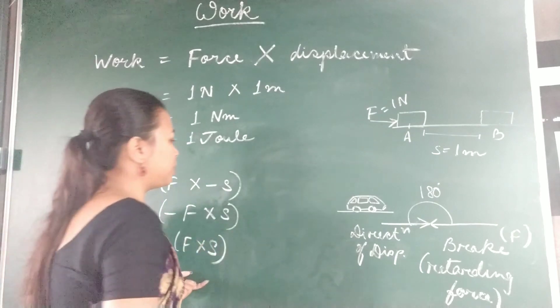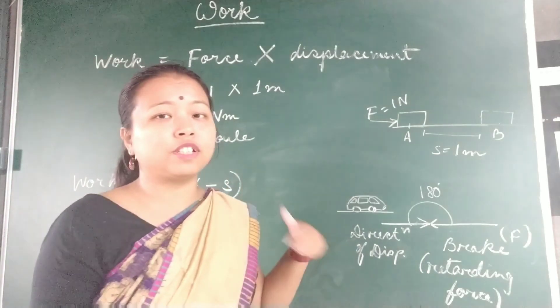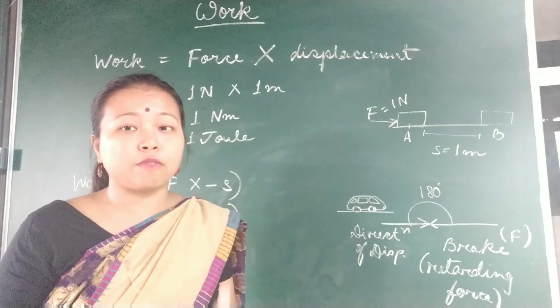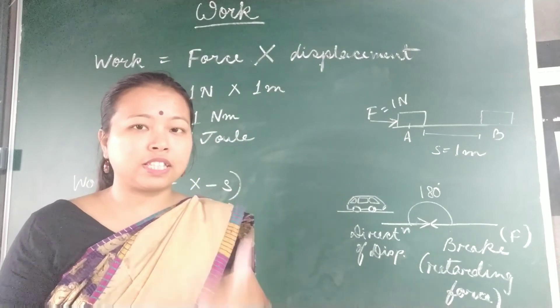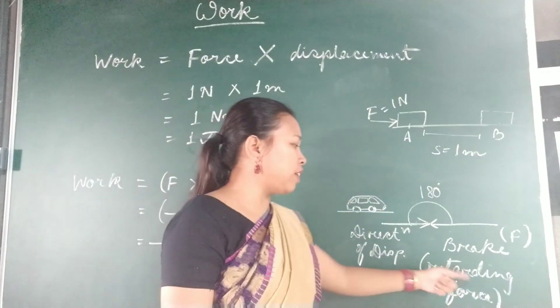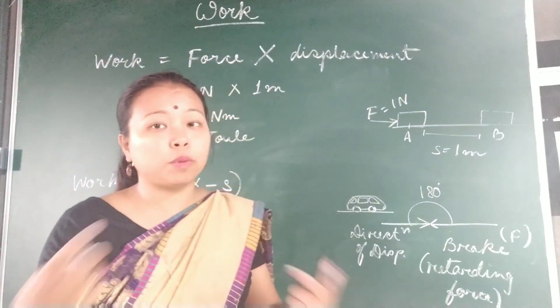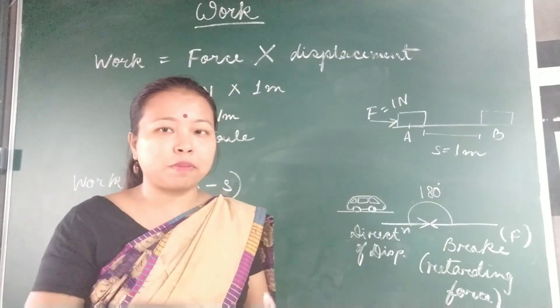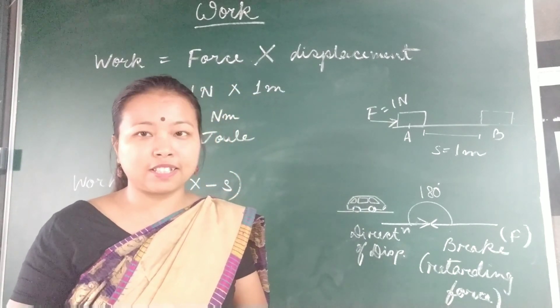So here we come to know work done is positive as well as negative. Its concept starts from force applied and displacement seen. Here you also come to know the retarding force is one kind of force which is opposite to the direction of displacement, where the work done value becomes negative.